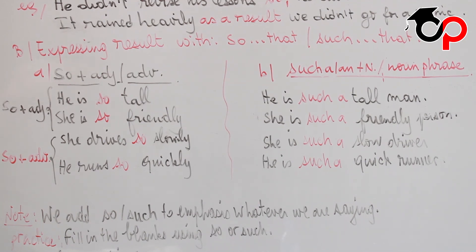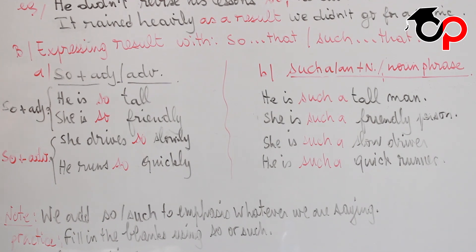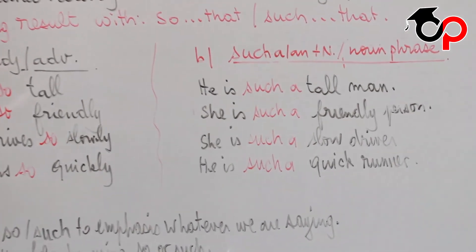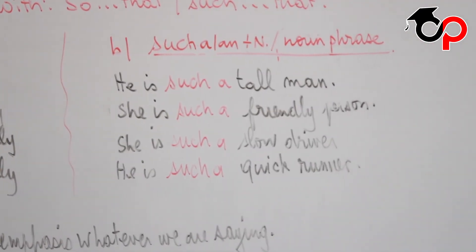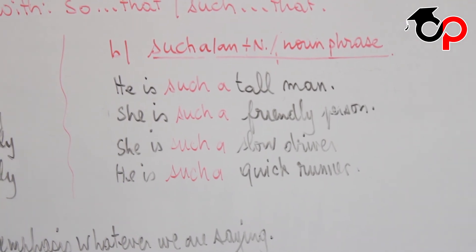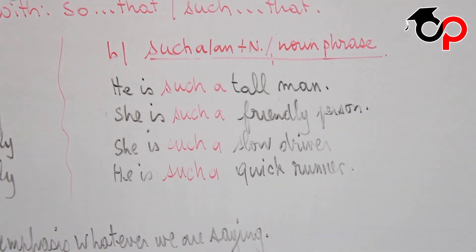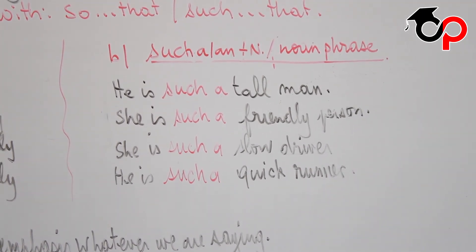And such plus a or an plus a noun phrase. The noun phrase is made up of adjective plus noun. So for the first sentence, he is so tall — when we write it with such, we say he is such a tall man. Tall man is a noun phrase made up of adjective plus noun.